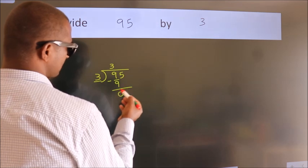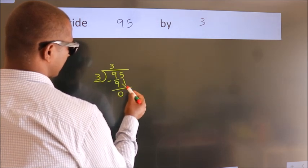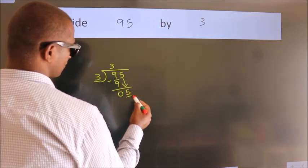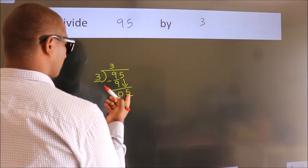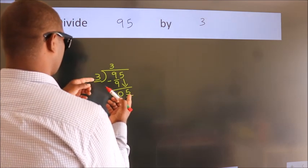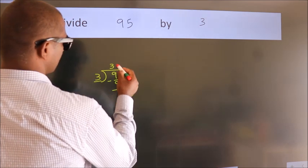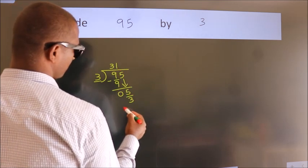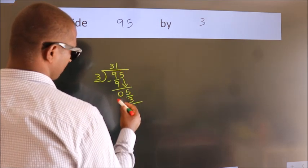After this, bring down the beside number. So, 5 down. A number close to 5 in 3 table is 3 once 3. Now, we subtract.